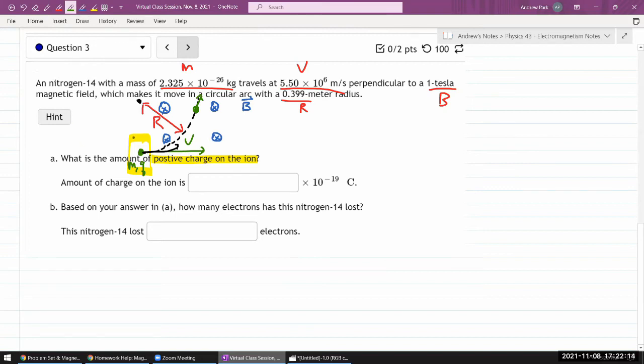The question asks what is the amount of positive charge on the ion. I don't think it gave us anything about the amount of charge. As you're looking at it, I hope you get this sense: you are given enough information to figure out the magnetic force through the expression that magnetic force is charge times v cross b.